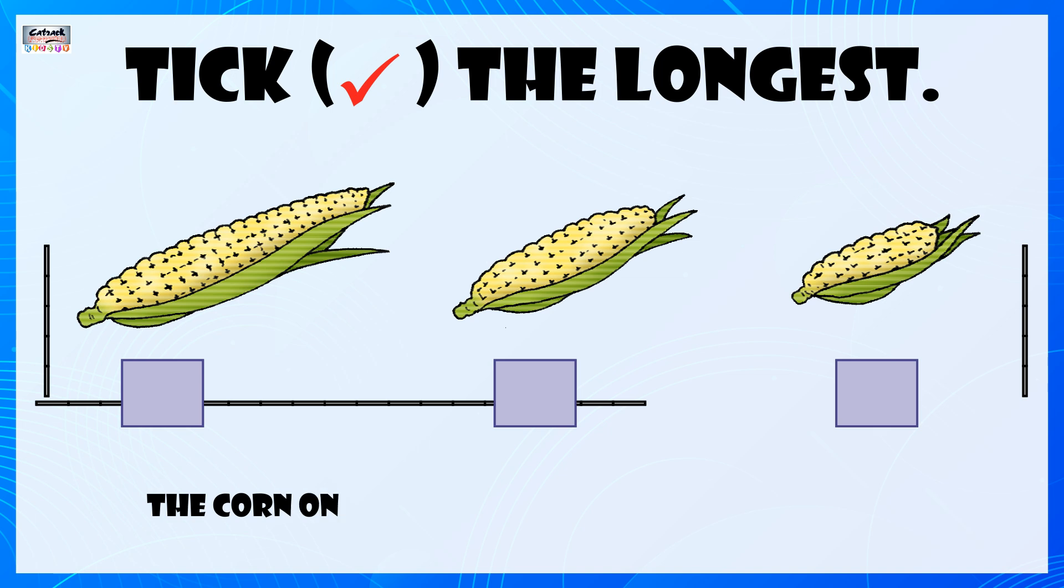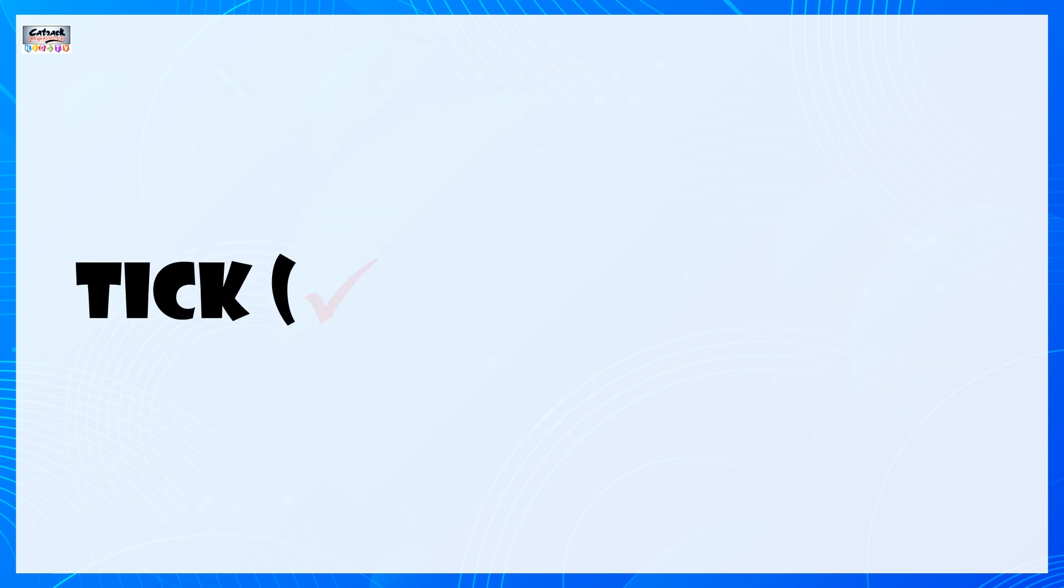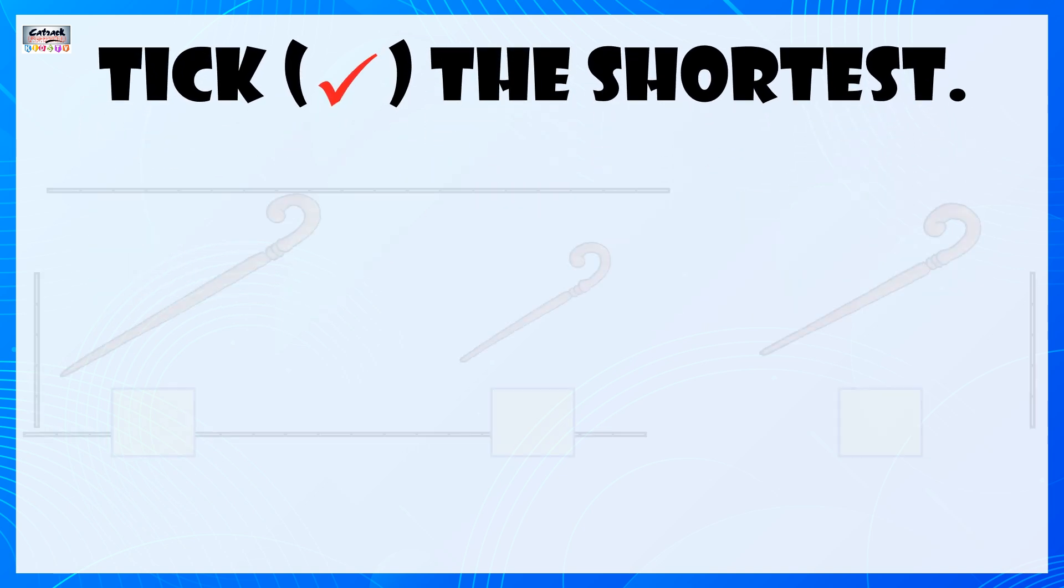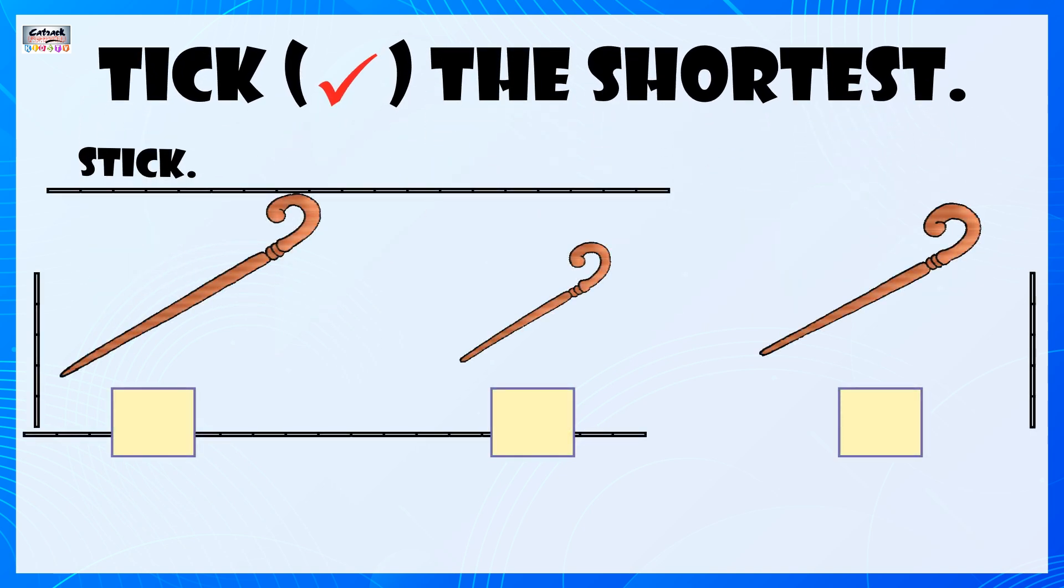The corn on the extreme left is the longest. Tick the shortest. The stick in the middle is the shortest.